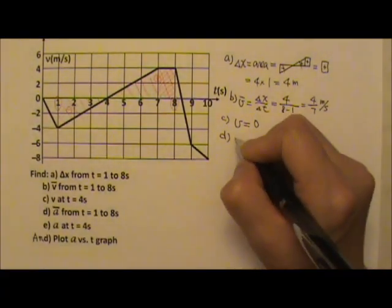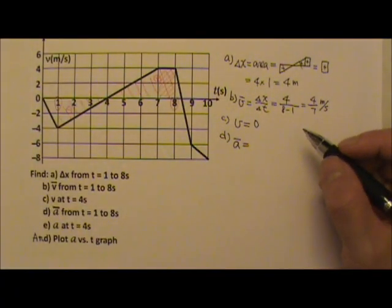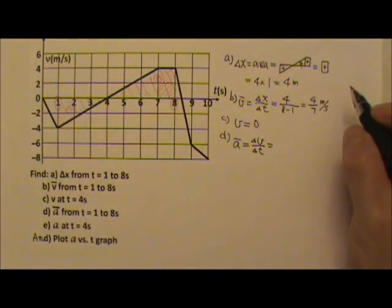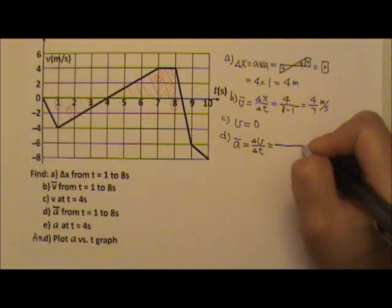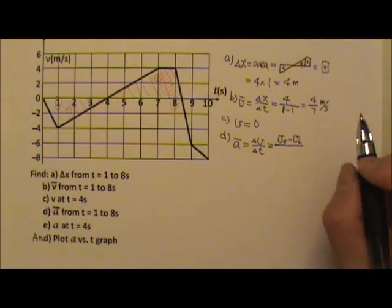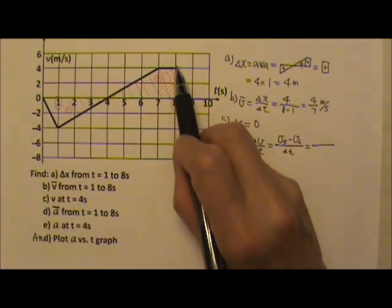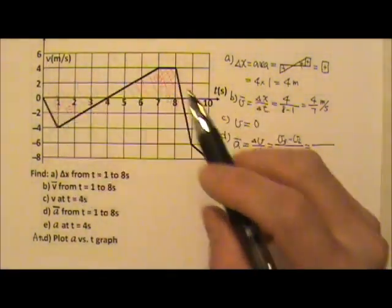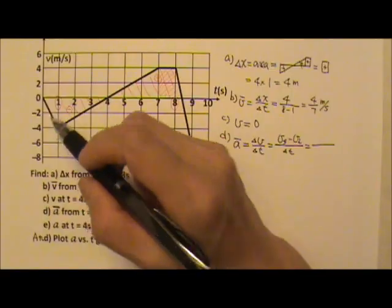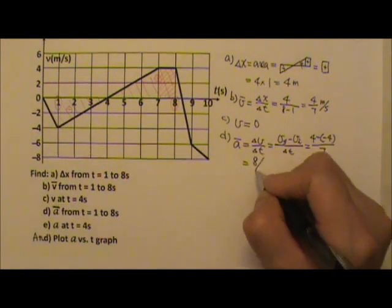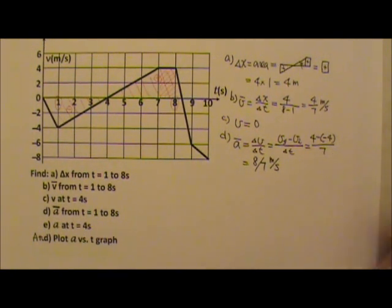For average acceleration, remember it is delta v over delta t. The graph gives us the velocity, so we have the final and initial velocity. Delta v equals final minus initial, divided by time. From the graph, the final velocity at 8 seconds is 4, and the initial velocity at 1 second is negative 4. So it's 4 minus negative 4, divided by 7 seconds, giving us 8 sevenths meters per second squared.